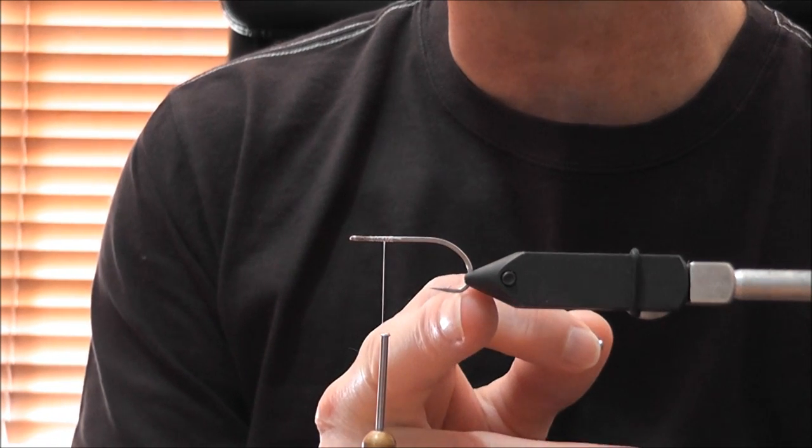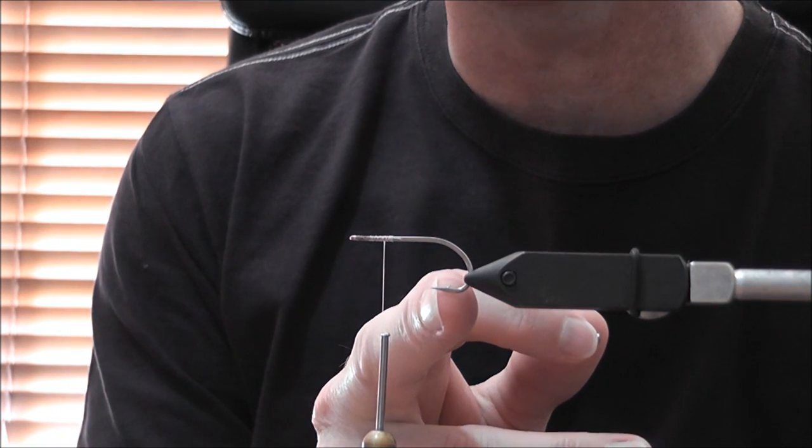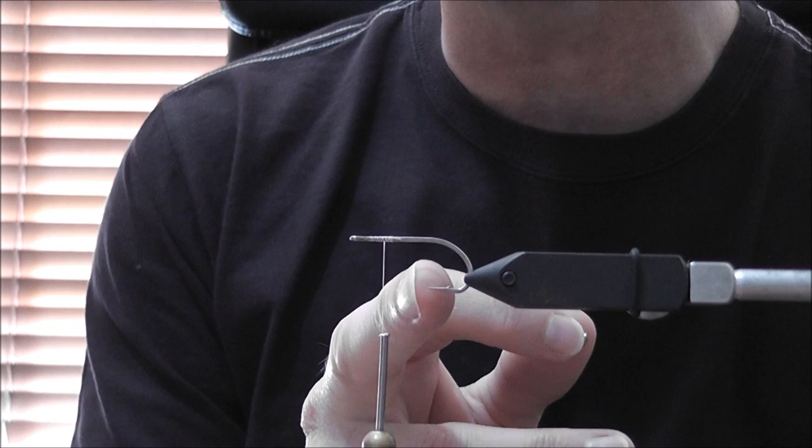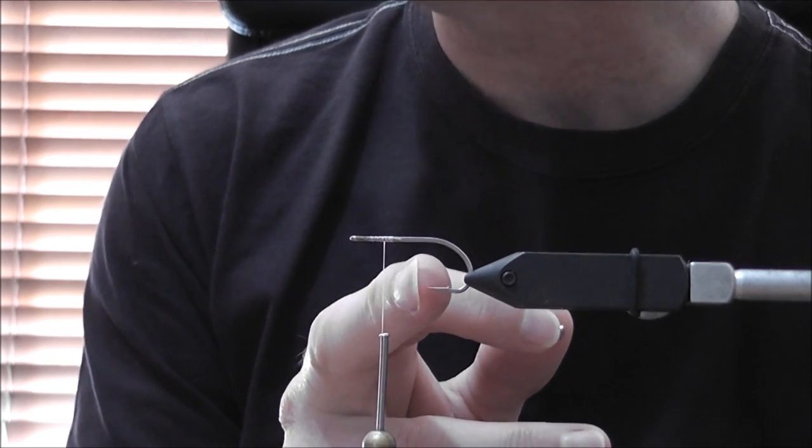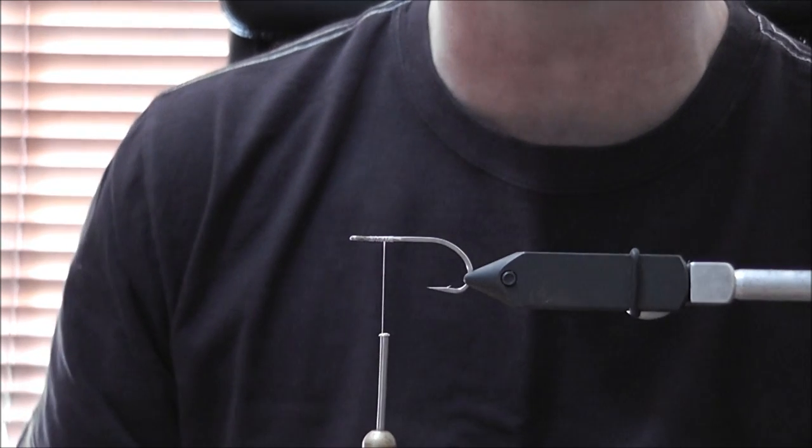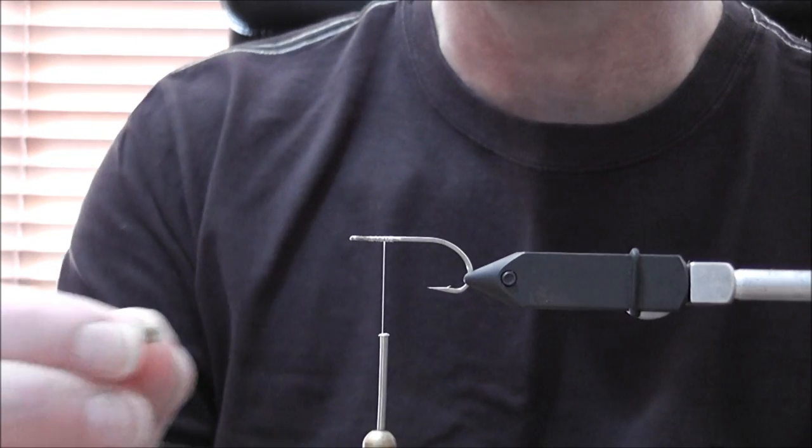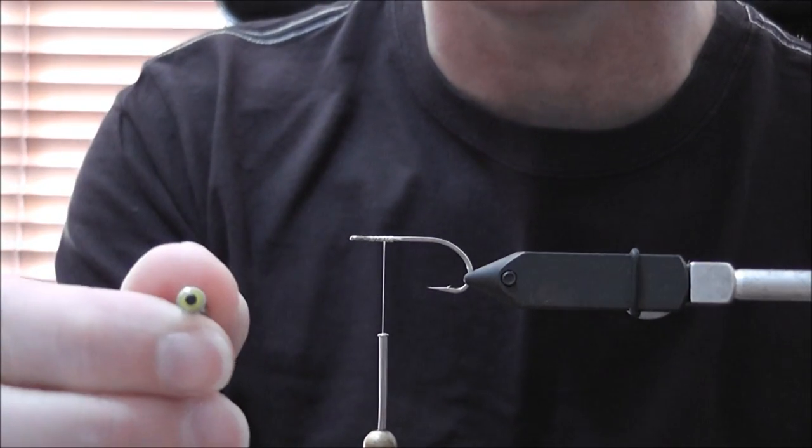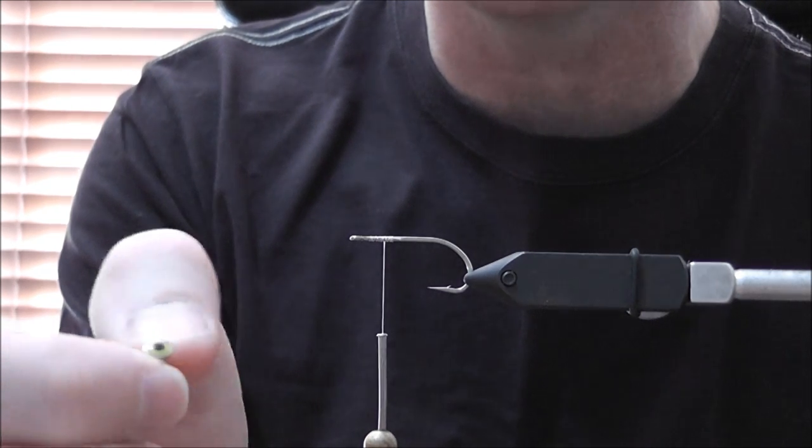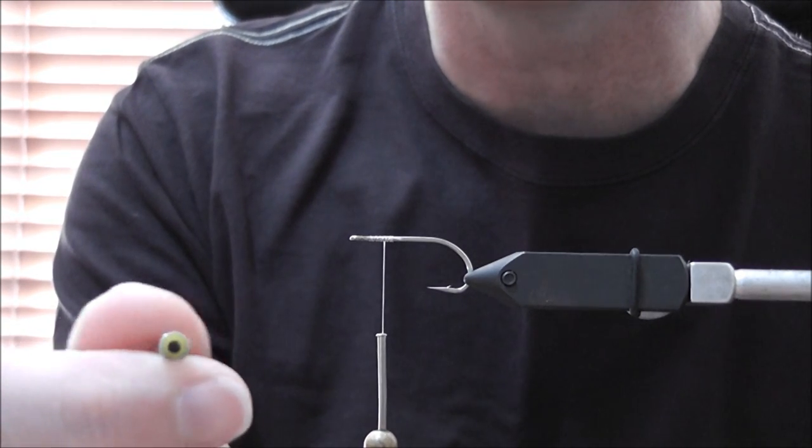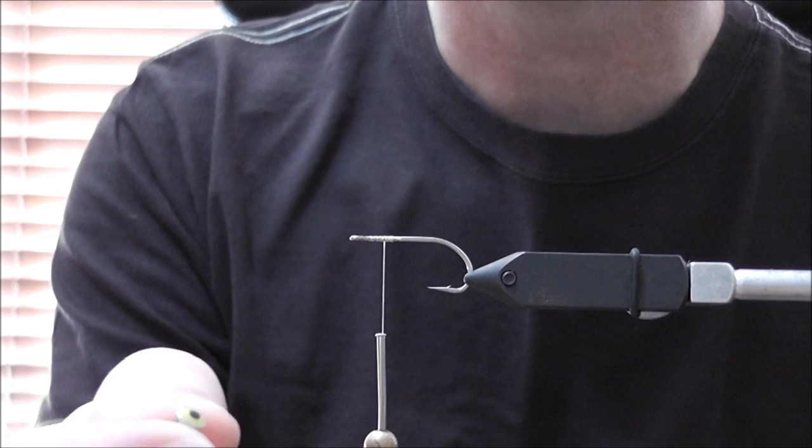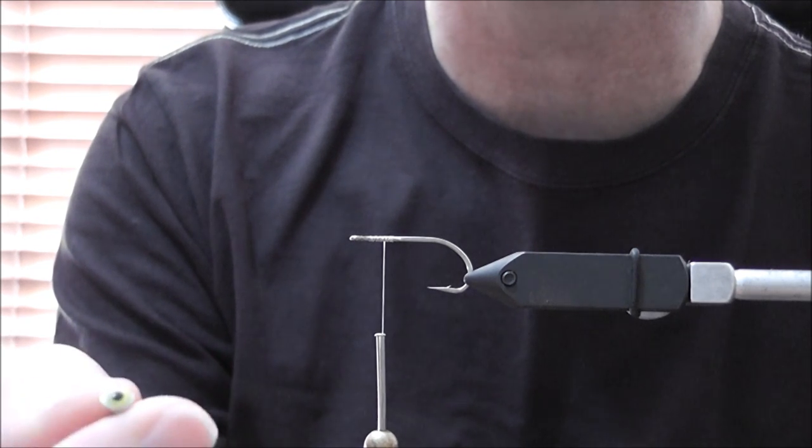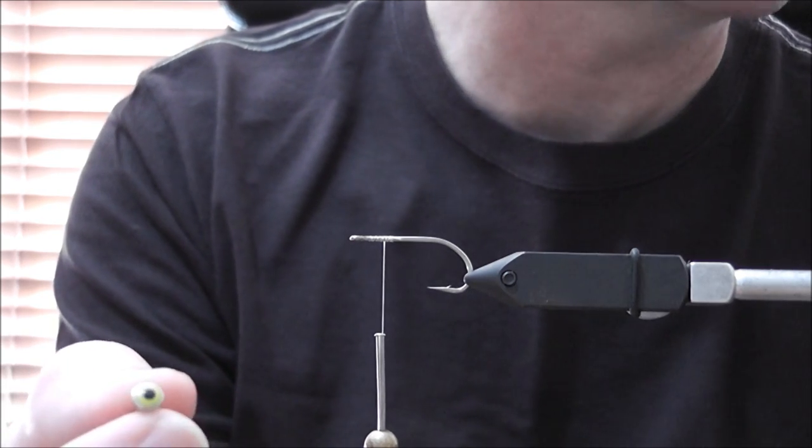The hook is a Daiichi 2546, that's a size 2. For flathead I usually tie them on a size 2. I tie some on size 4s for brim as well. And just using the old dumbbell eyes. These are real eyes plus that have already got the eye embedded into the dumbbell, so you don't have to muck around with that. They're resin eyes, so they're never going to come out.